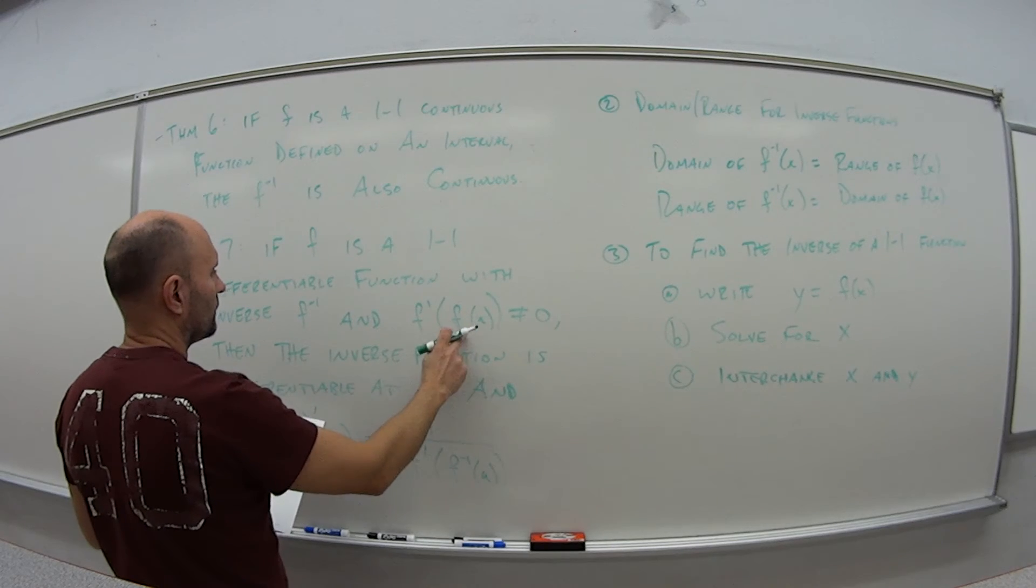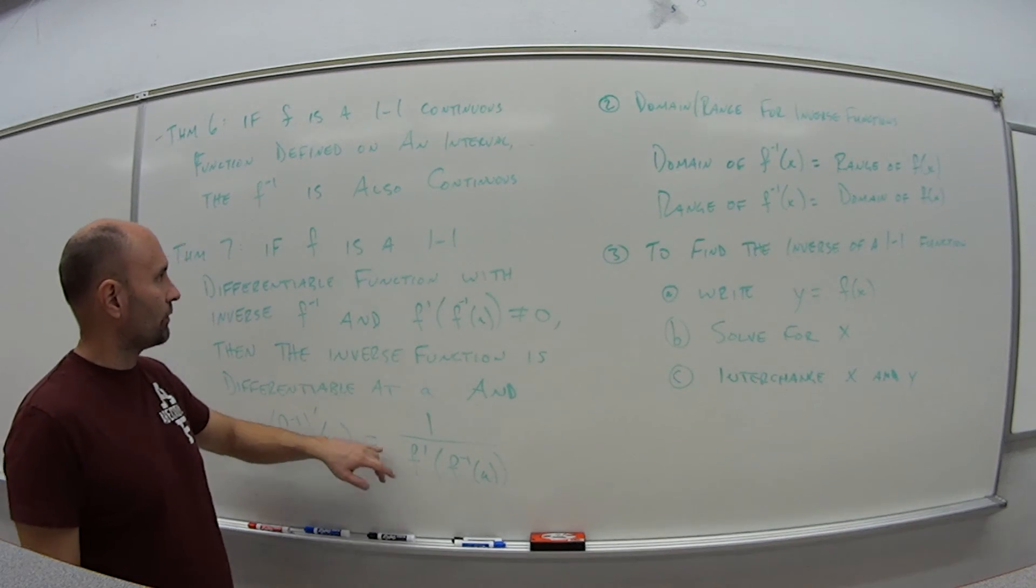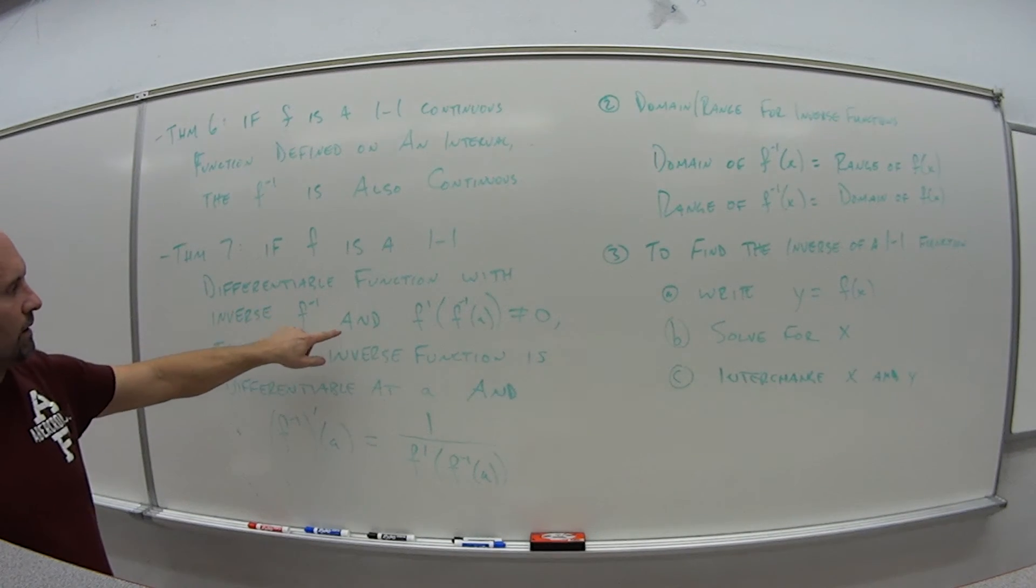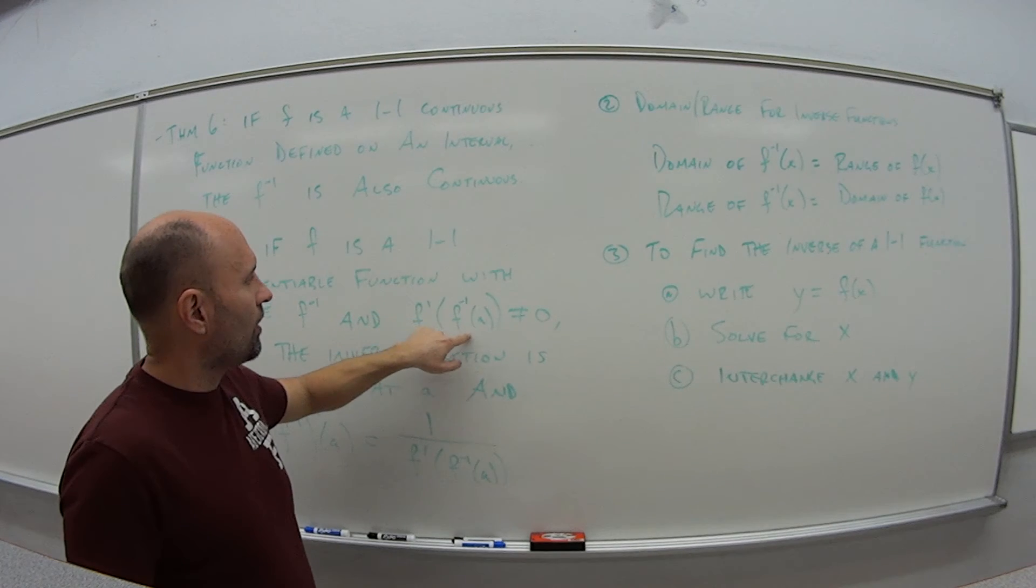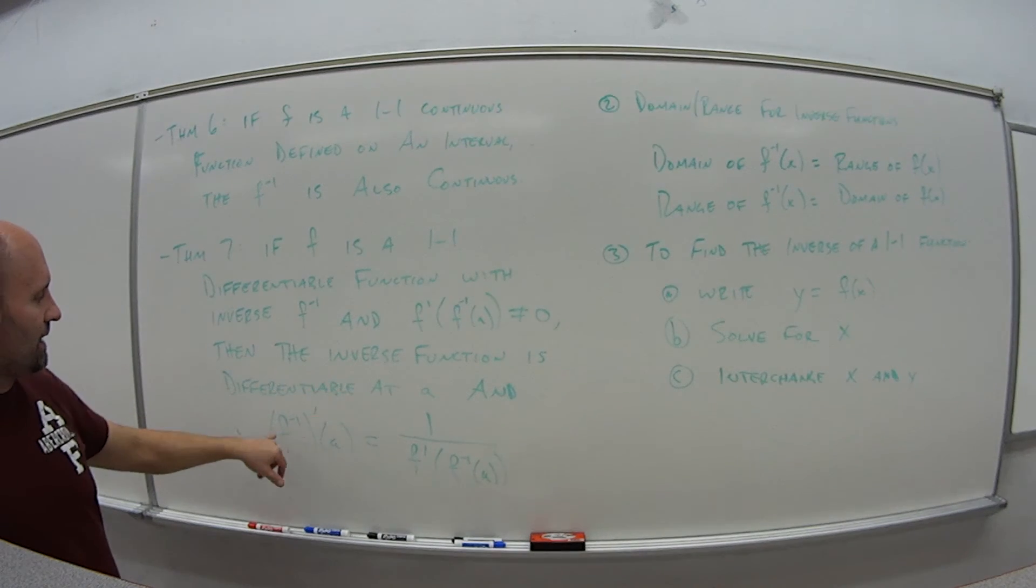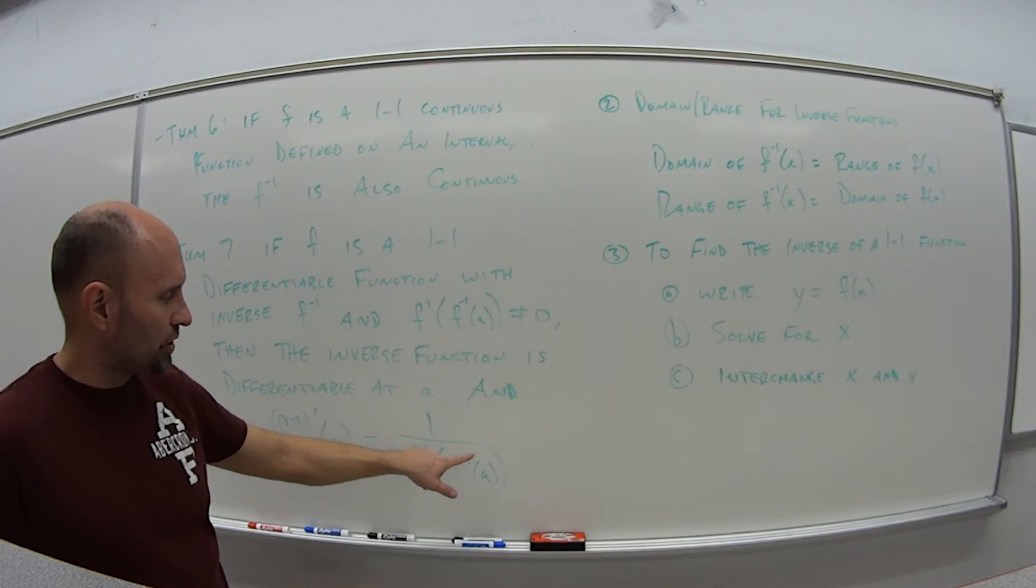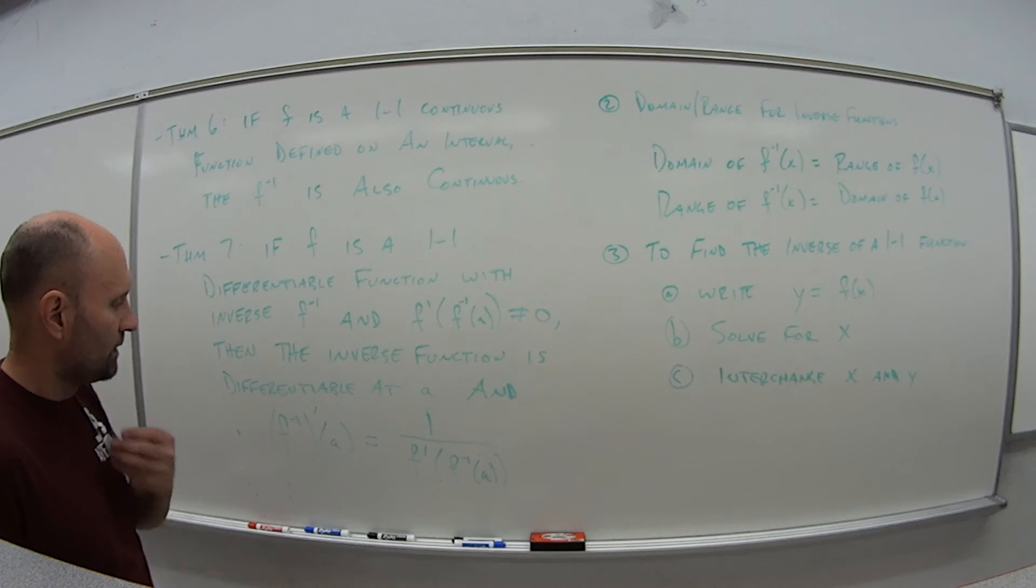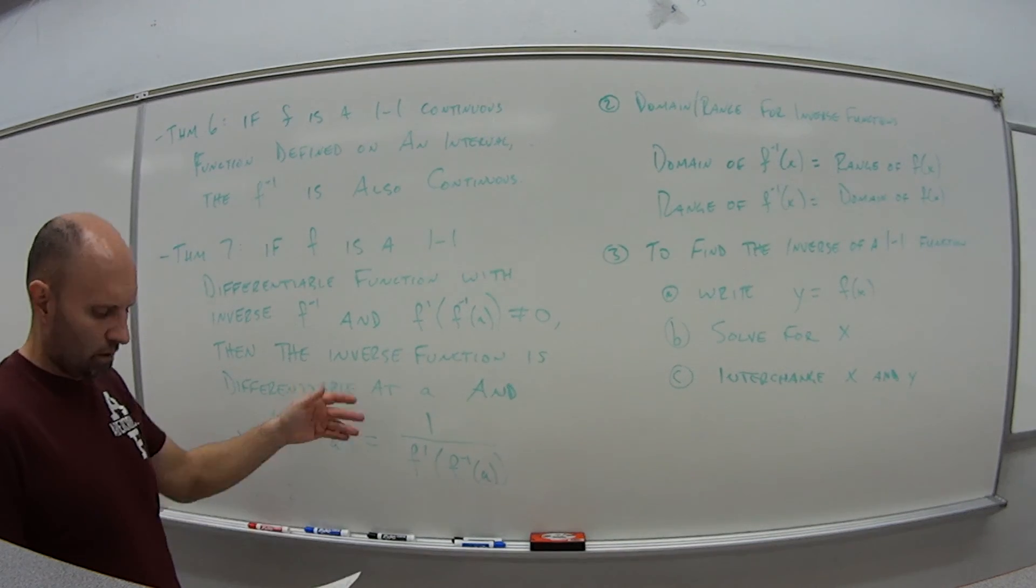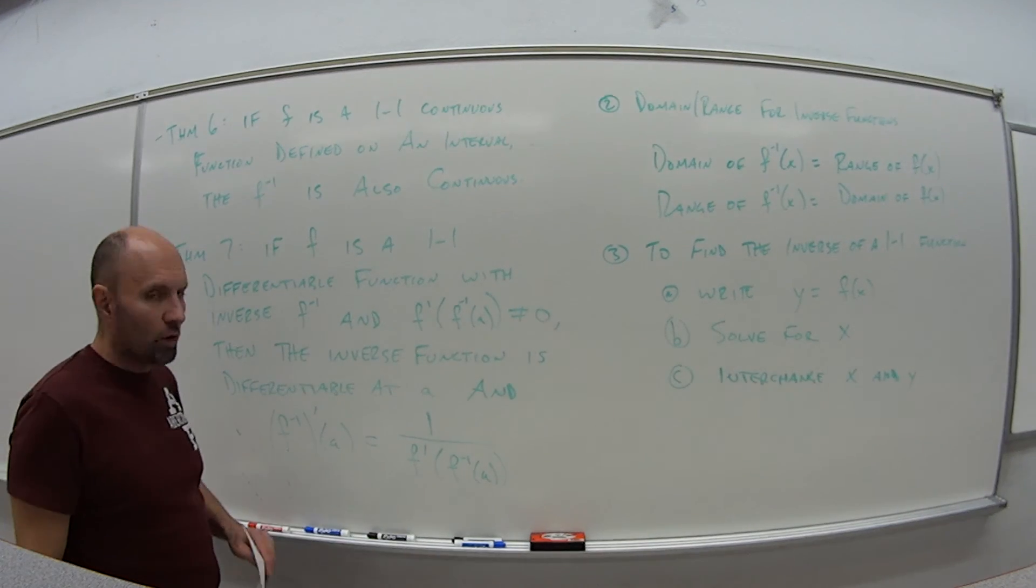And f inverse prime of a is equal to one over f prime of f inverse of a. If f is a one-to-one differentiable function with inverse f inverse and f prime of f inverse of a is not zero, then the inverse function is differentiable at a and its derivative at a is just equal to the derivative of the original function and we plug in the value that we get when we plug in a into that inverse function. We'll see an example in a little bit of this.